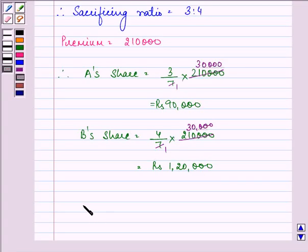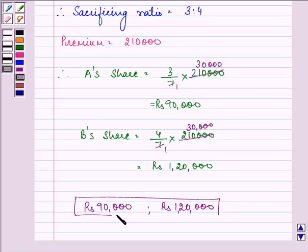The answer to this question is A has share Rs 90,000 in it and B is given Rs 1,20,000 as the share in the goodwill.